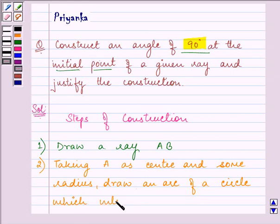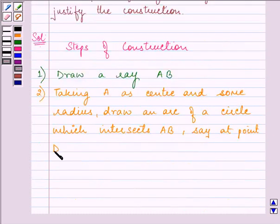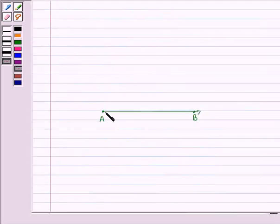This arc intersects ray AB, say at point D. So taking some radius with center A, we draw an arc like this intersecting AB at point D.